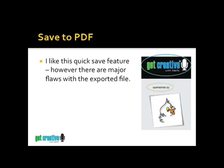Next is the ability to save to PDF. I really like this quick-save feature. However, there are some major flaws with the exported file. Several times I've come up with instances where it has actually cut off type. If you look at the graphic on this screen where it says 'sponsored by,' the very top part of that type has been sliced off. And my Get Creative logo is kind of turned bitmappy and blended back into the background. So I like it for quick proofing, however it's still got a few flaws within that feature.